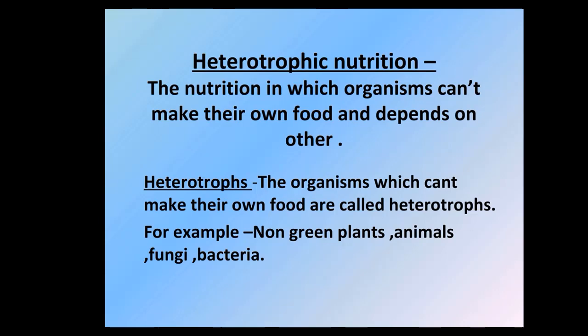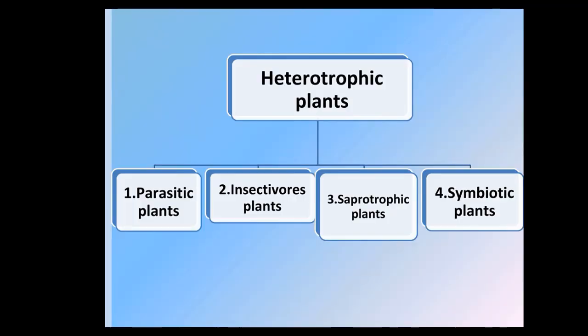Examples of heterotrophs include non-green plants, animals, fungi, and bacteria. Non-green plants are non-photosynthetic — they can't make their own food but still have the characteristics of plants. There are four different types of heterotrophic plants: parasitic plants, insectivorous plants, saprotrophic plants, and symbiotic plants.